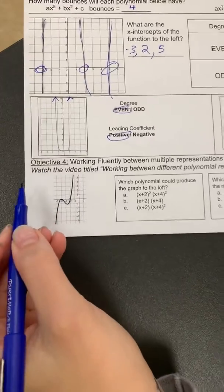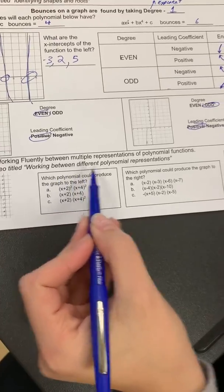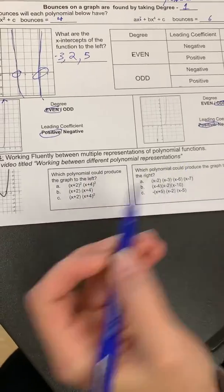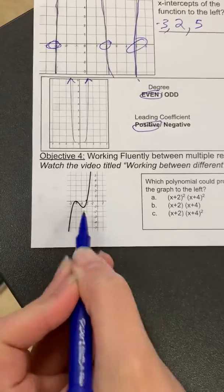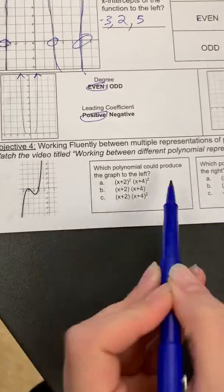This is objective four of the polynomial functions power focus area, and it's all about working between different polynomial representations. So here's our first example where I'm giving you a graph of a polynomial, and you have to pick which equation matches the graph.